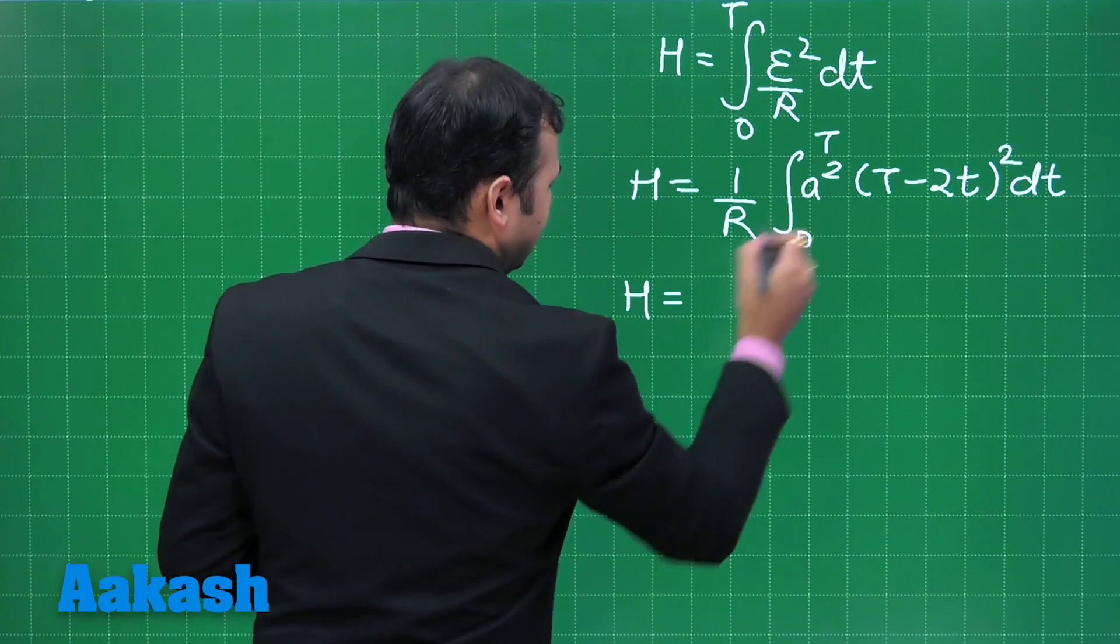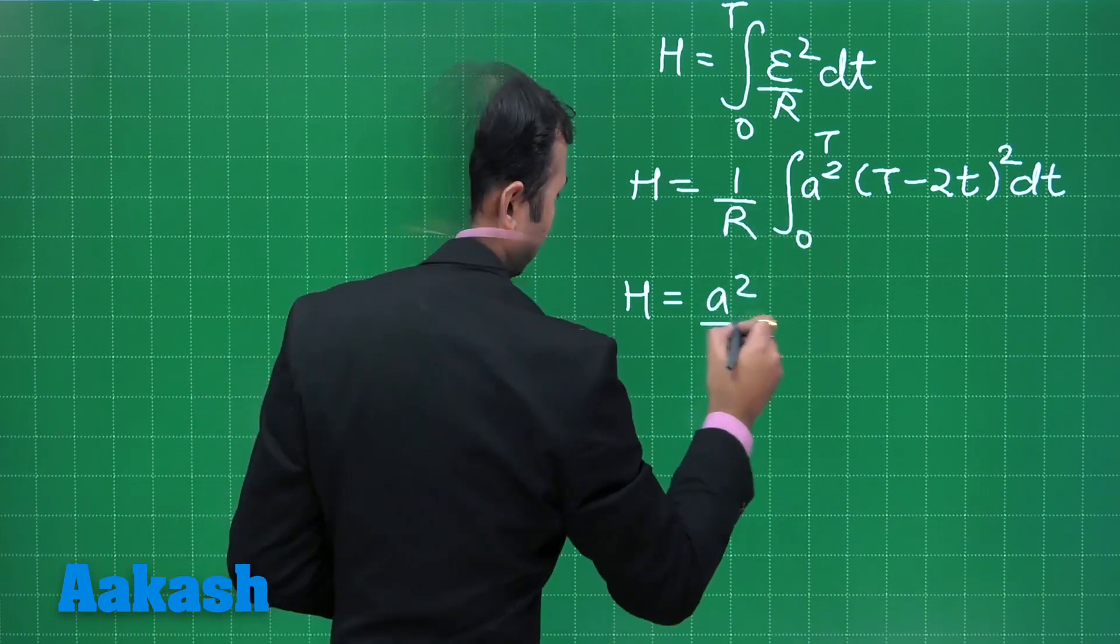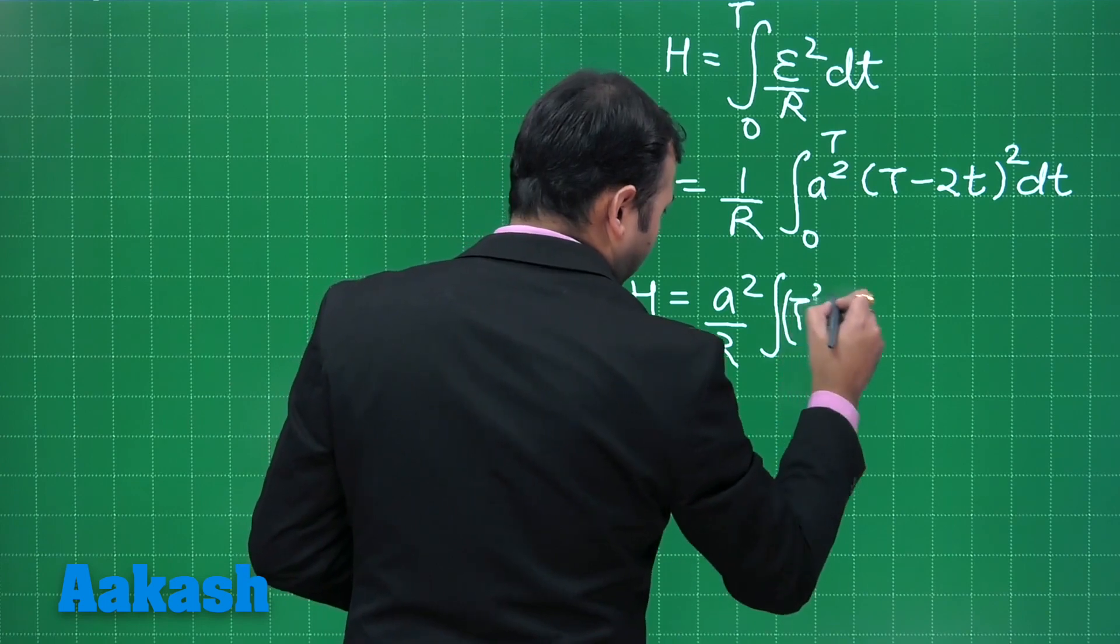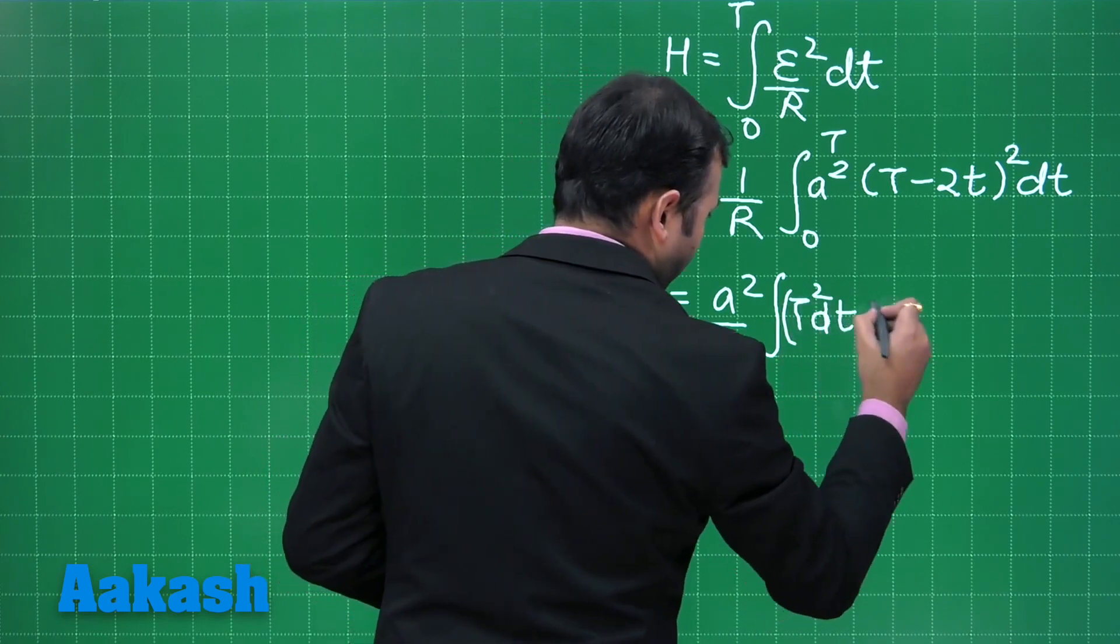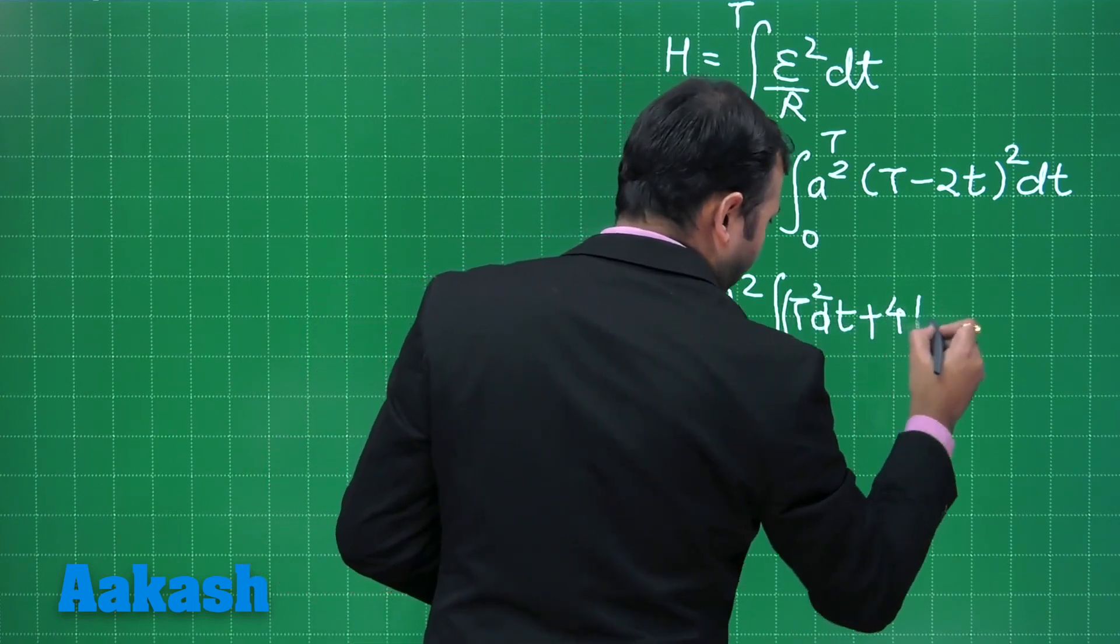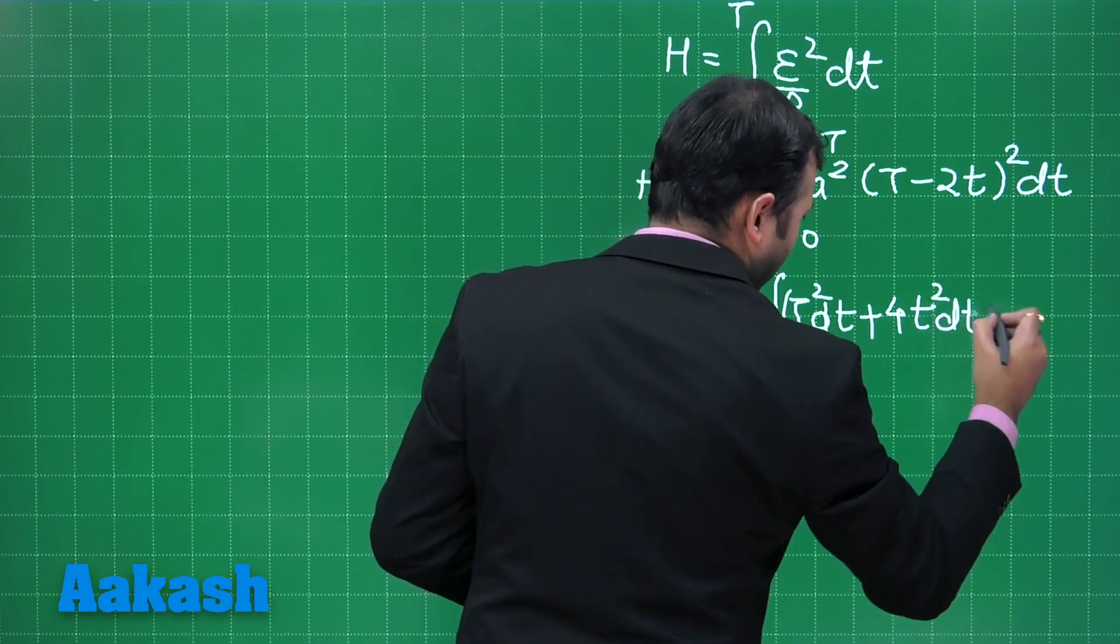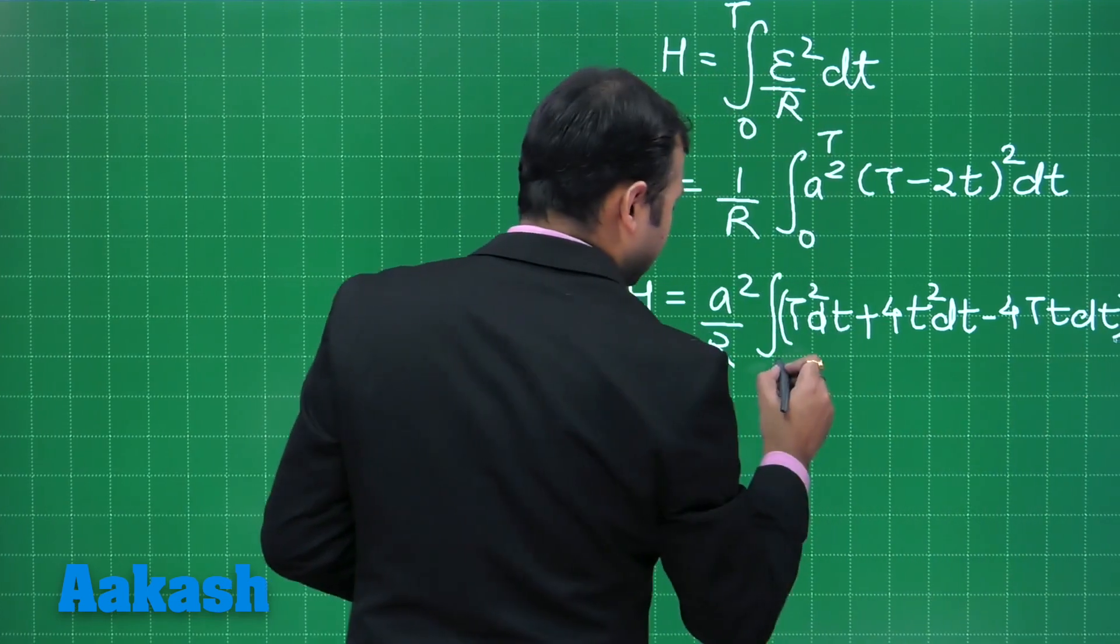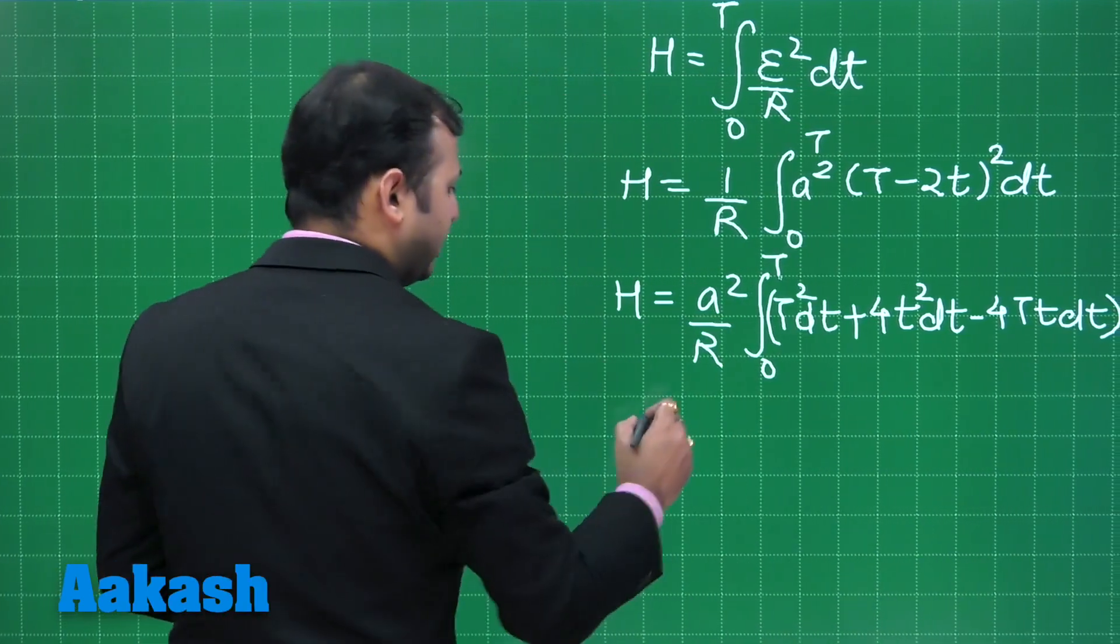A square is a constant. It will come out A square by R integral of T square dt plus 4t square dt minus 4 capital T small t dt, right? And this integral should be from 0 to capital T.